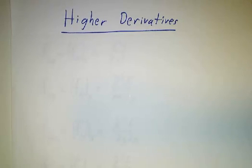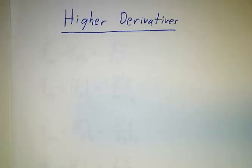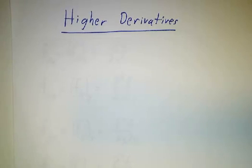Back when we learned about derivatives, we learned that the derivative of a function was another function, and that you could take the derivative of that — we call that the second derivative — and you could take the derivative of that, the third derivative, and so on. There's no end to how many times you can take a derivative. Well, the same thing goes for partial derivatives.